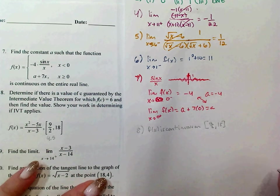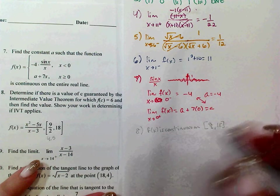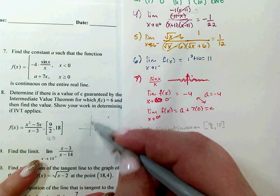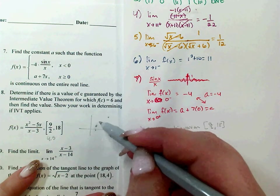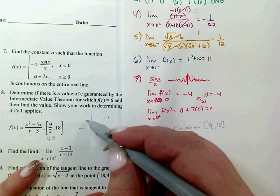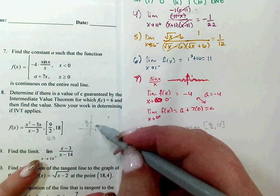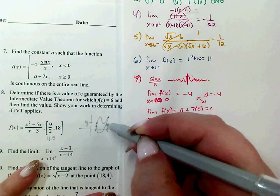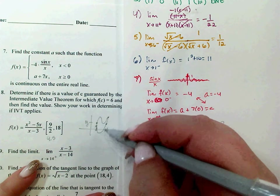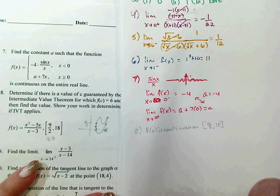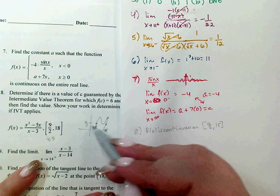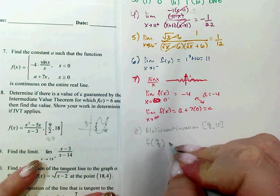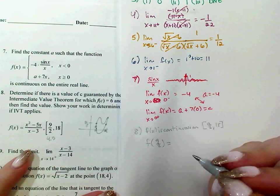IVT says that if you're at one x value and another x value, the function must hit every y value in between. To establish that IVT applies, you need to show that the desired y value — 6 — lies between the two endpoint y values. So we calculate f of 9/2 and f of 18.